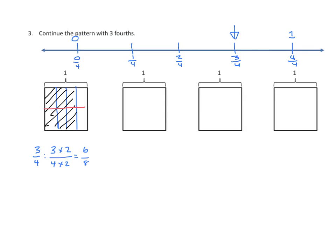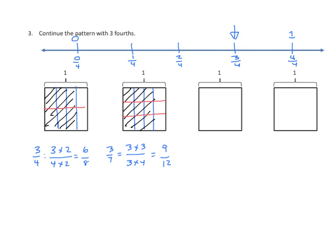Let's do another. Again, we're going to partition it into four parts using three vertical lines, shading 3 fourths once again. At this point, we want to partition it into three parts using two horizontal lines. So we have 3 fourths equals 3 times 3 over 4 times 3 equals 9 twelfths. We now have 12 parts in all and 9 of them are shaded. So we can see that 3 fourths and 9 twelfths take up the same area of this rectangular model.